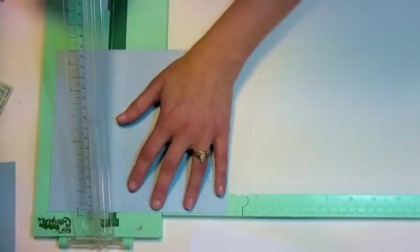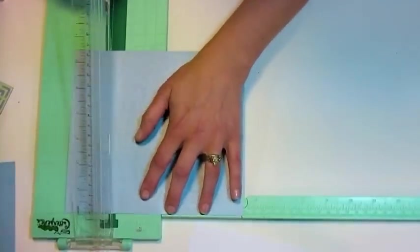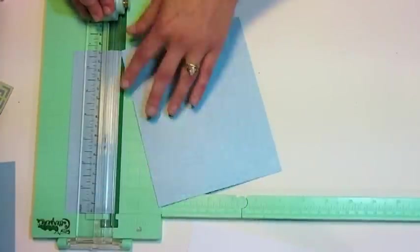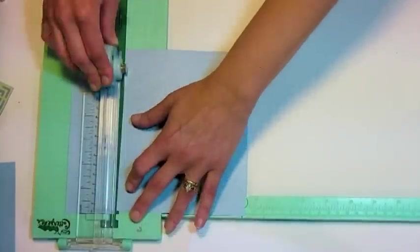I'm using my measuring arm to make sure that I've got everything the right size. Six and three quarters, cut five and a half here. Take your time to make sure you're cutting it accurately.